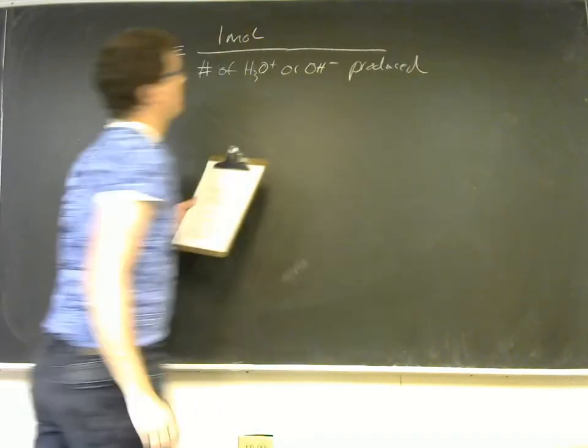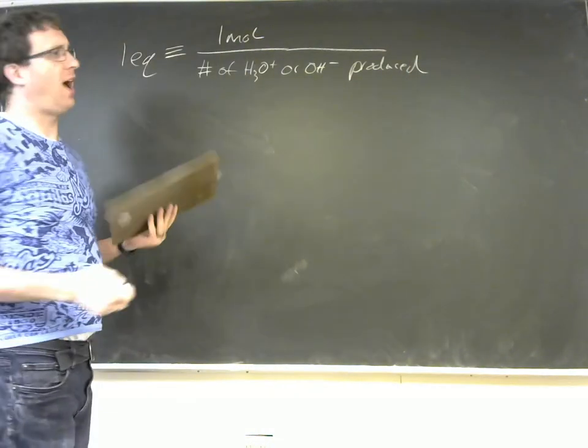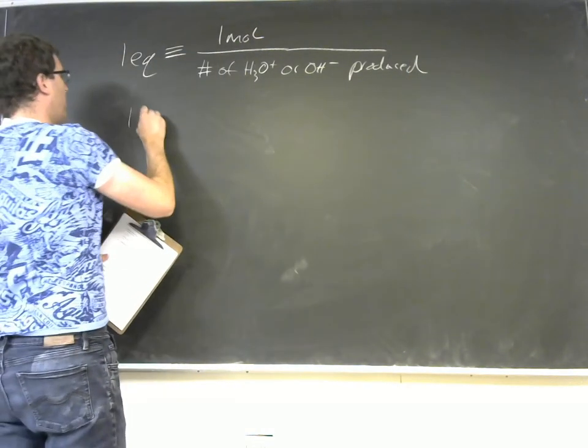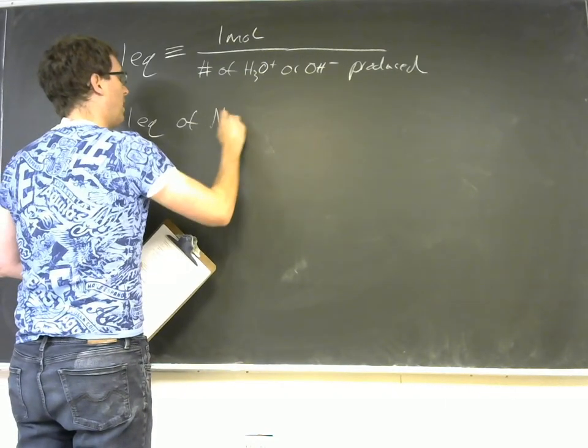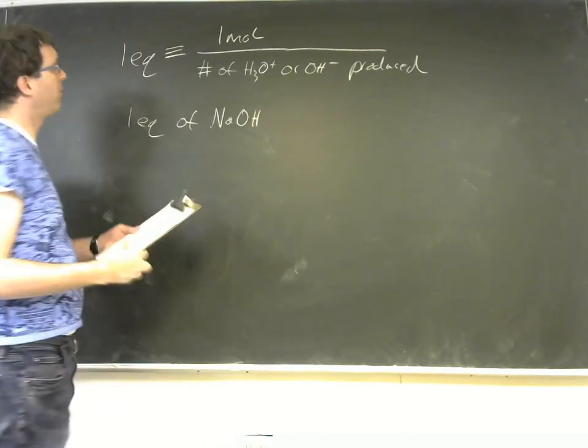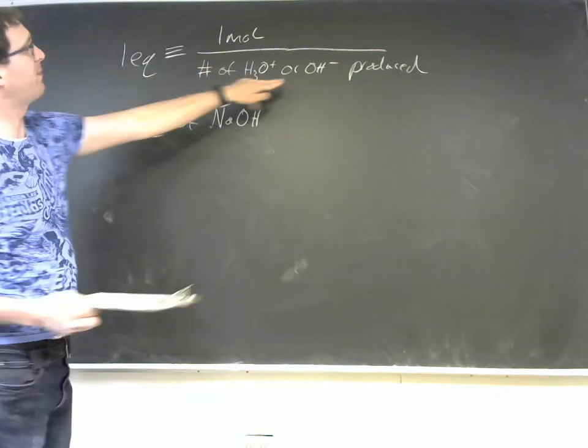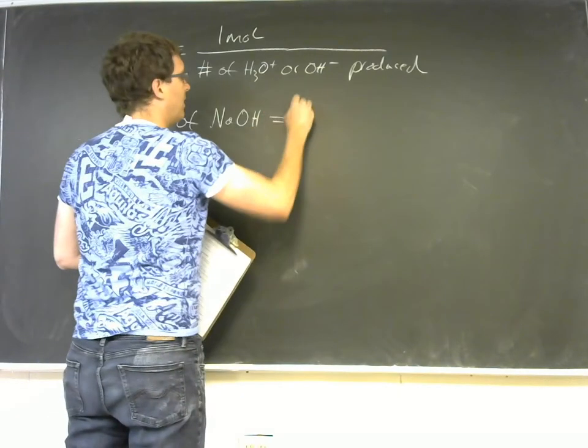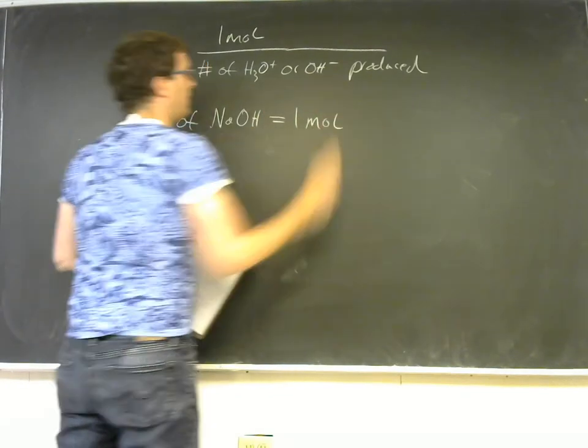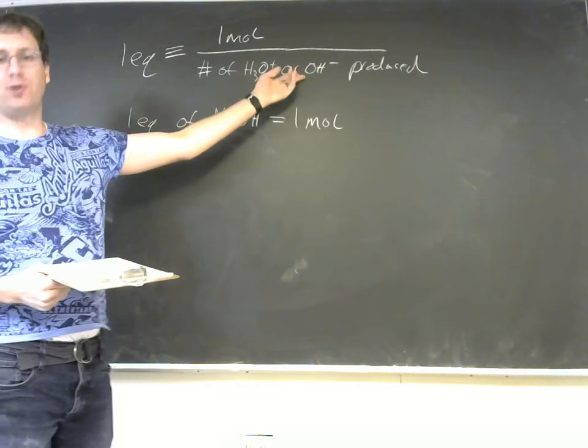So if I wanted one equivalent of NaOH, then that would be one mole divided by one, or one mole, because NaOH will produce only one hydroxide.